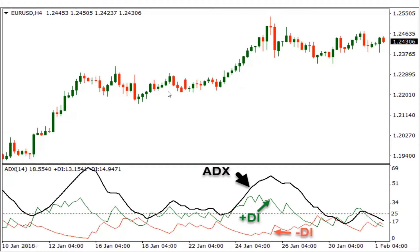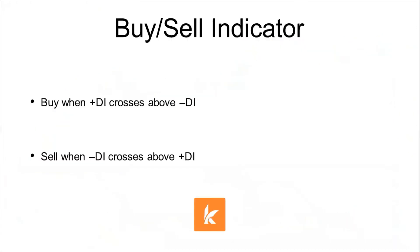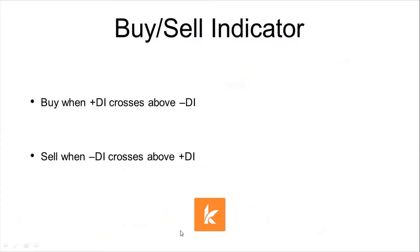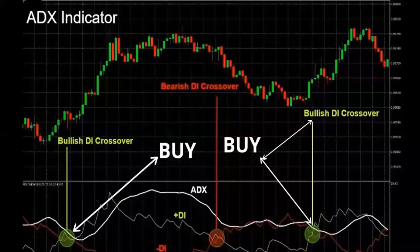This indicator can also be used as a buy or sell indicator. There are two lines — a green line and a red line. The green line is known as the Positive DI and the red line is known as the Negative DI. Whenever the Positive DI crosses above the Negative DI there is a bullish crossover and it generates a buy signal. Whenever the Negative DI crosses above the Positive DI, it generates a sell signal.